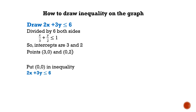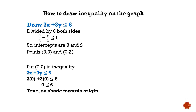To determine the shading, put the origin (0, 0) into the inequality 2x plus 3y less than or equal to 6. After substituting (0, 0), we get 0 less than or equal to 6, which is true. So shade towards the origin.